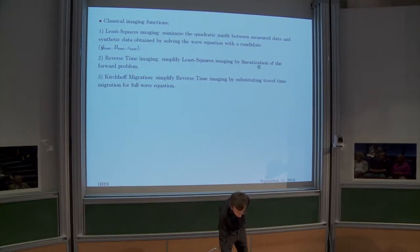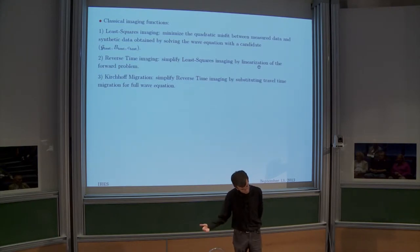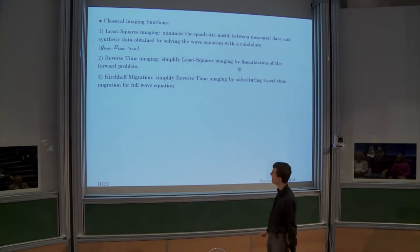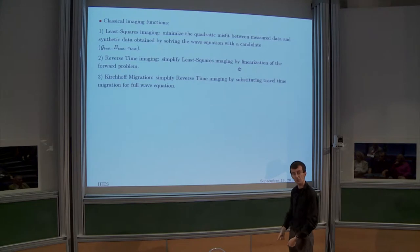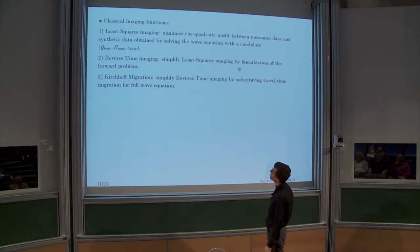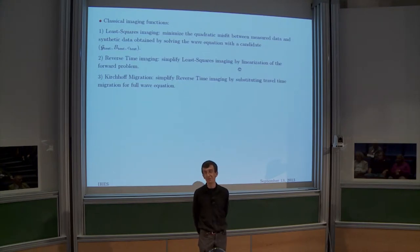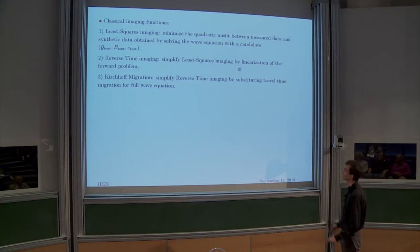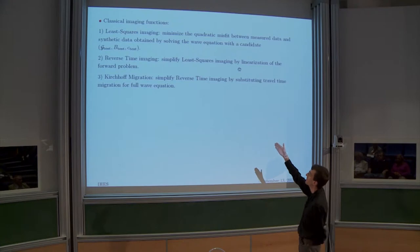When you linearize the forward problem using the Born approximation, you obtain a quadratic minimization problem whose global minimizer is quite simple: you solve one wave equation with the time-reversed measured data as the source. You take your measured data, time-reverse them, use that as a source, solve the wave equation in time, and what you get is refocusing exactly at the reflector location. This is called reverse time imaging. But for practitioners even this is too complicated.